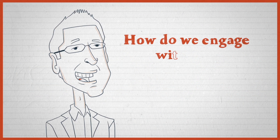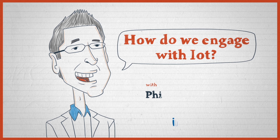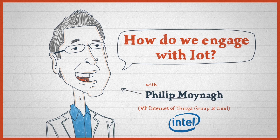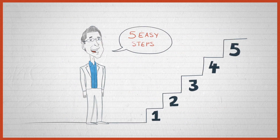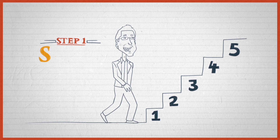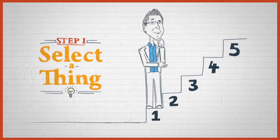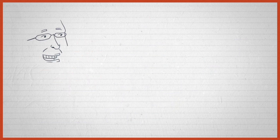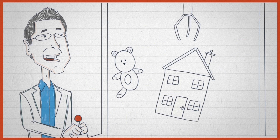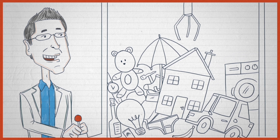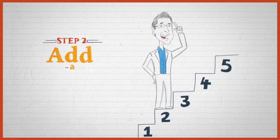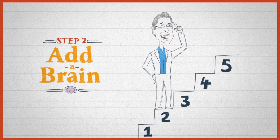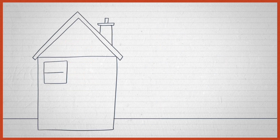How do I engage in the revolution that is the internet of things? Well, it's five easy steps. The first and most obvious thing is: select a thing — a light bulb, a washing machine, a car, a lawn, a building. Just select a thing that matters to you.